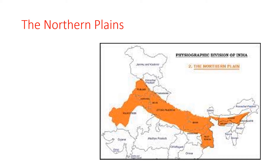The Northern Plains are the face of the country. Let us see the location of the Northern Plains. Look at this Indian map — the Northern Plains lie between the Himalayas and the Southern Plateau.